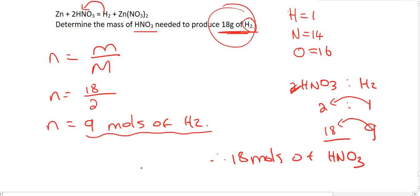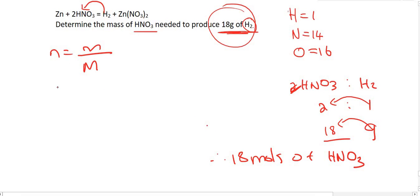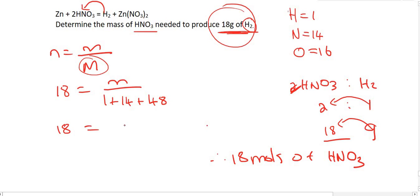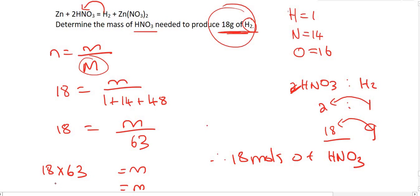We then convert that into mass using n = M/Mm. We have 18 moles of HNO₃. The molar mass is 1 hydrogen + 14 nitrogen + 3 oxygens (each 16), giving 48 for the oxygens, so the total molar mass is 63. Therefore, mass = 18 × 63 = 1,134 grams.